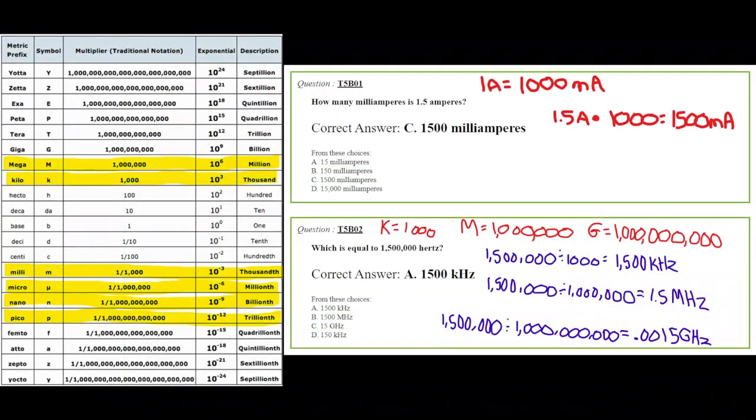Let's go to question 1. Question 1 says, how many milliampers is 1.5 amperes? Now a milliamp is one one-thousandth of an amp. So if you go down and look at your answers, you have all kinds of milliamps. You could convert each one. So 15 milliampers, if you divide 15 by 1,000, would give you 0.015 amps. Well, that doesn't equal what they're asking for.